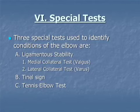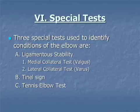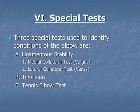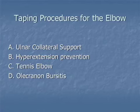A few special tests for the elbow are very similar to those for the knee — the valgus and varus stress test — with the difference being the structures we're testing. We'll demonstrate that in video or in class. Tinel's sign will indicate if a nerve, like the ulnar nerve, is inflamed or damaged. We will also demonstrate how to identify tennis elbow. The following taping and bracing procedures will be demonstrated on our YouTube site. Please have any questions prepared to ask in class.